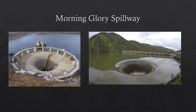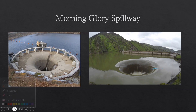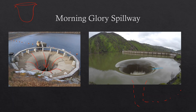Another type is the morning glory spillway, also called a glory hole spillway, shaft spillway, or bell mouth spillway. It consists of a vertical entry shaped like an inverted bell, designed to match the natural flow curve of falling water. This leads to a tunnel that opens at the downstream side of the dam, releasing the water.